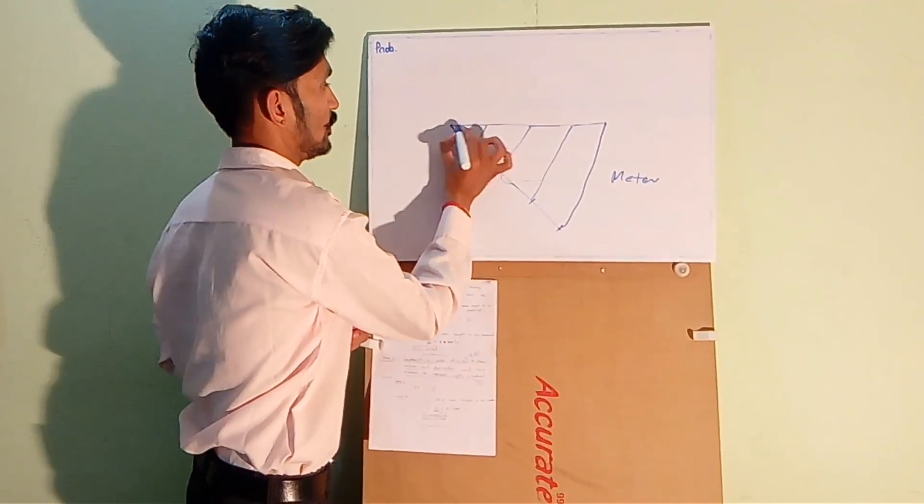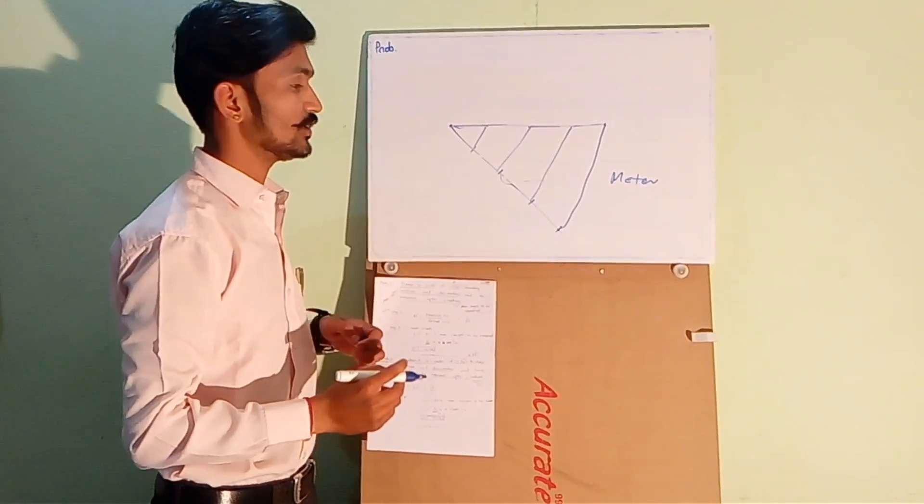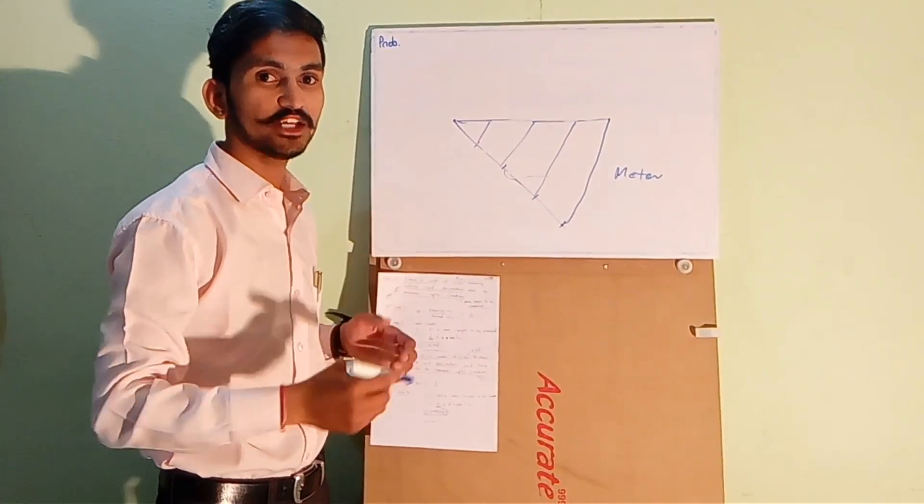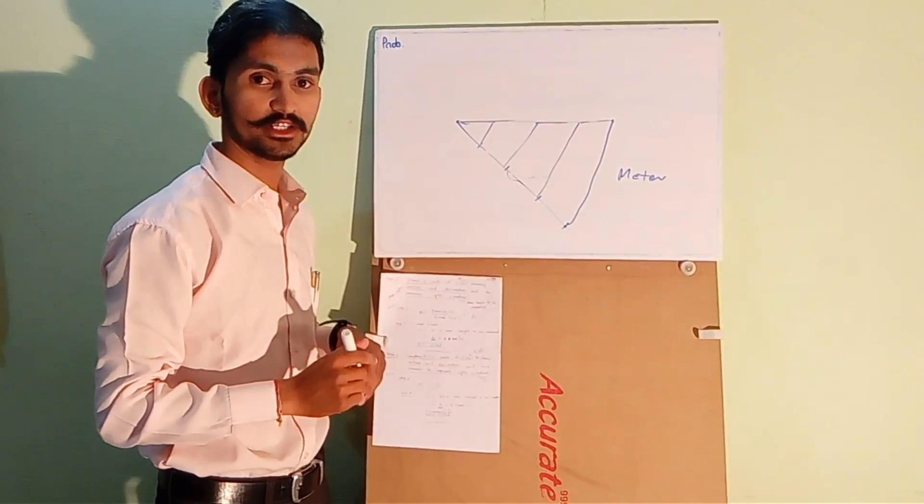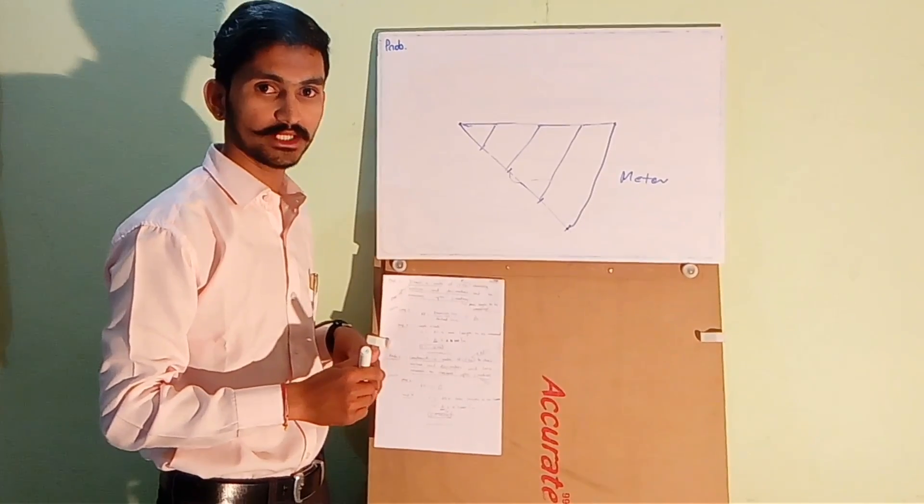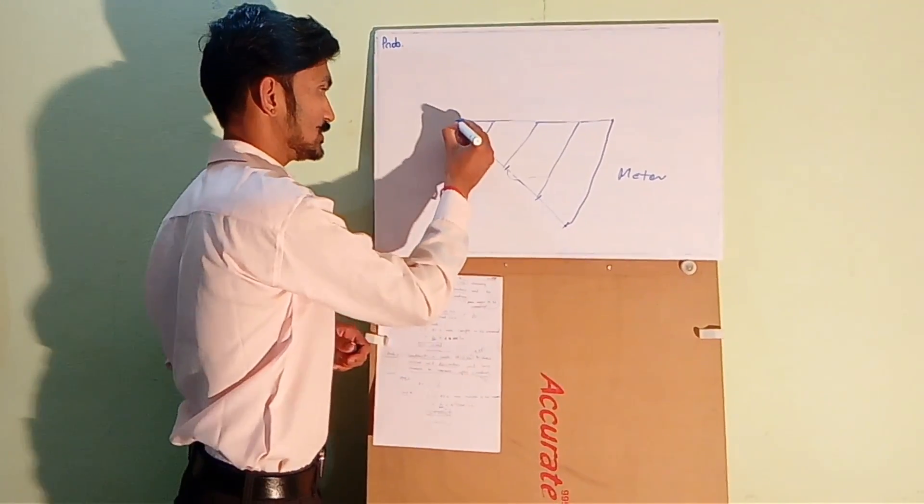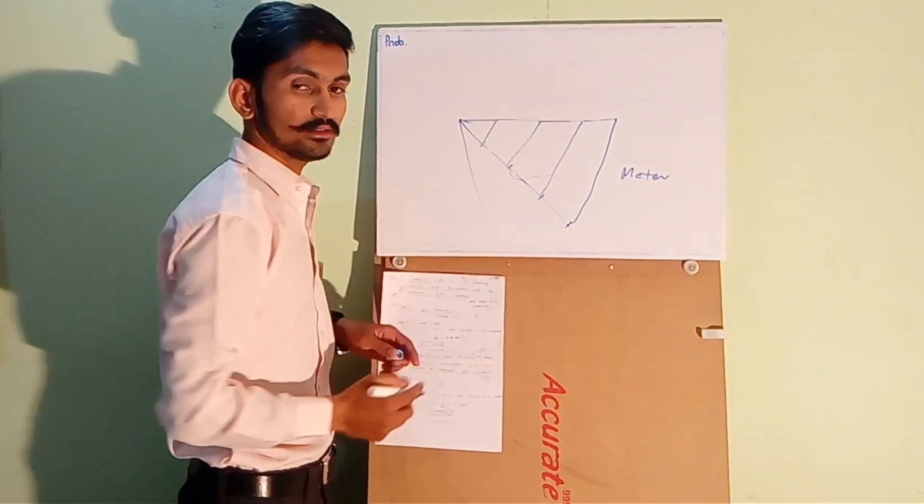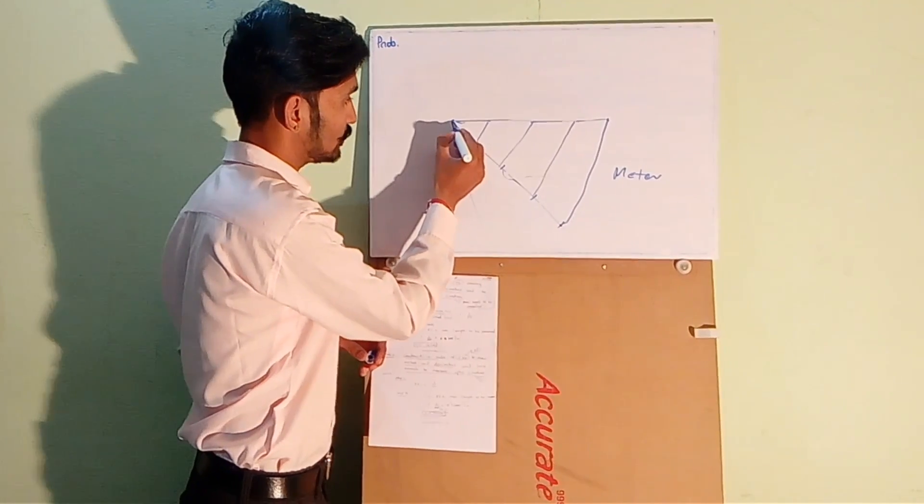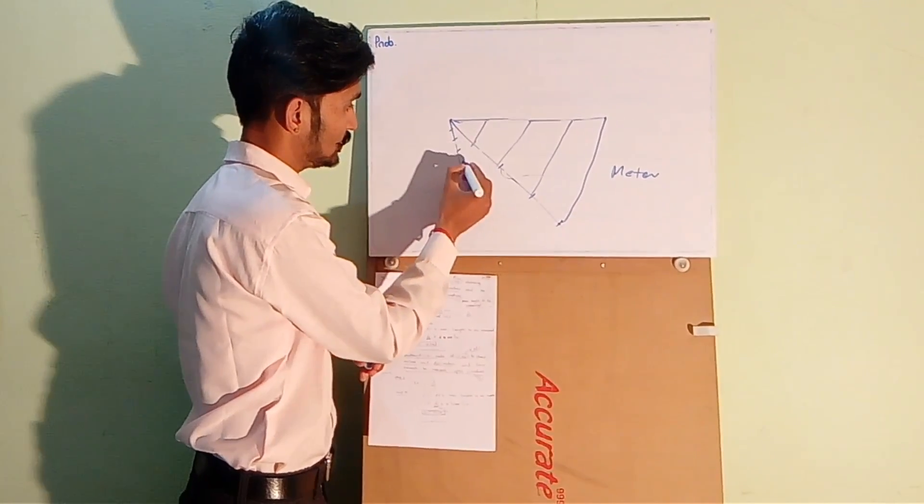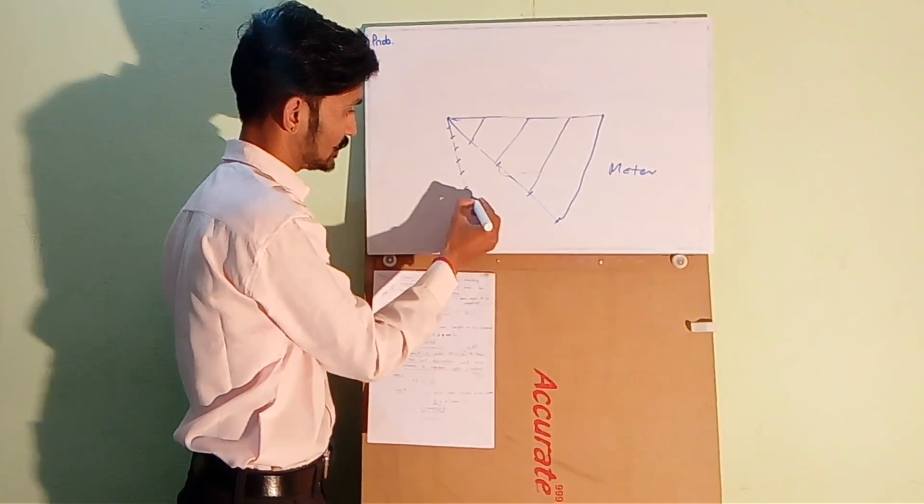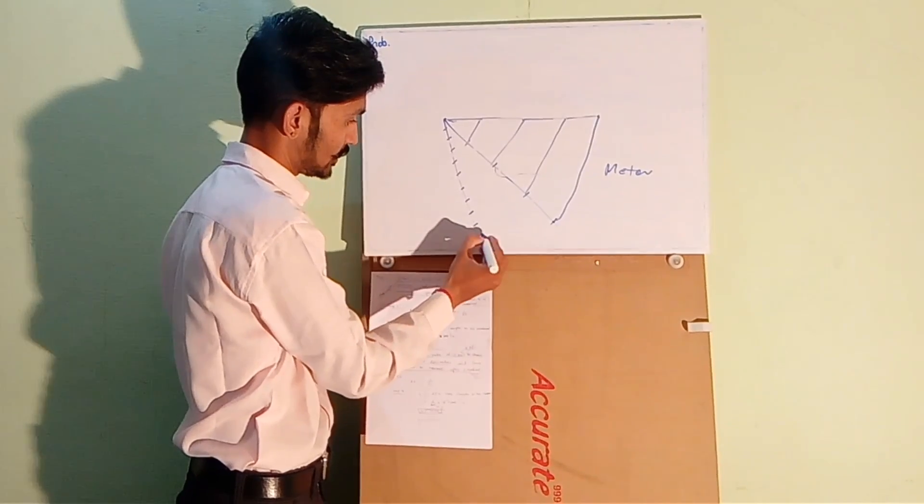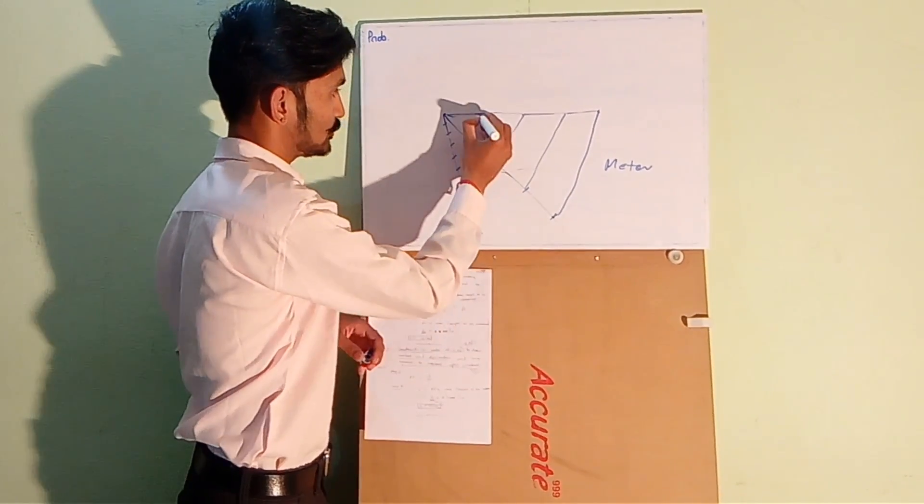Now we have to divide the first part in 10 equal parts to show decimeters, because 1 meter is equal to 10 decimeter. The procedure is very simple. Draw a line, divide this line into 10 equal parts: 1, 2, 3, 4, 5, 6, 7, 8, 9, and 10. Join this point to this point.